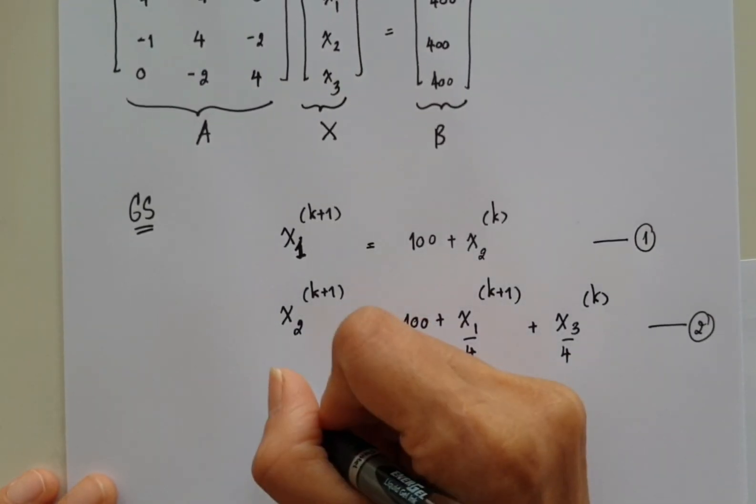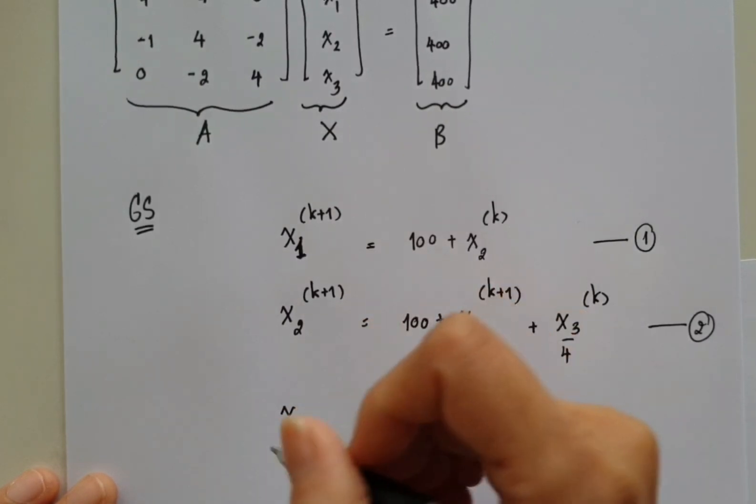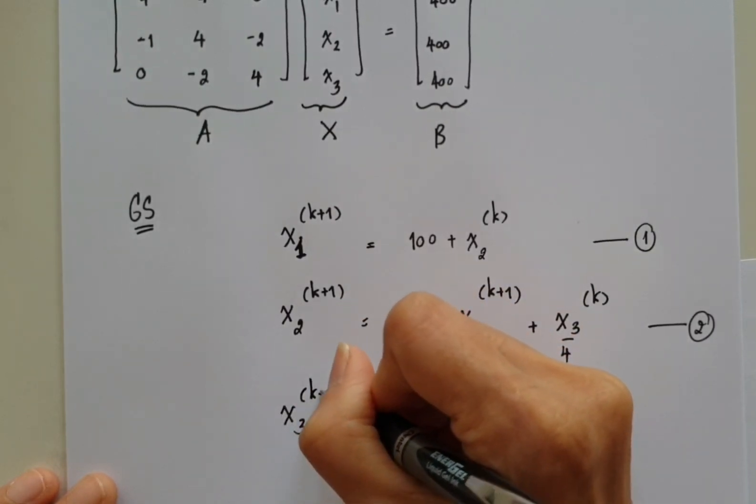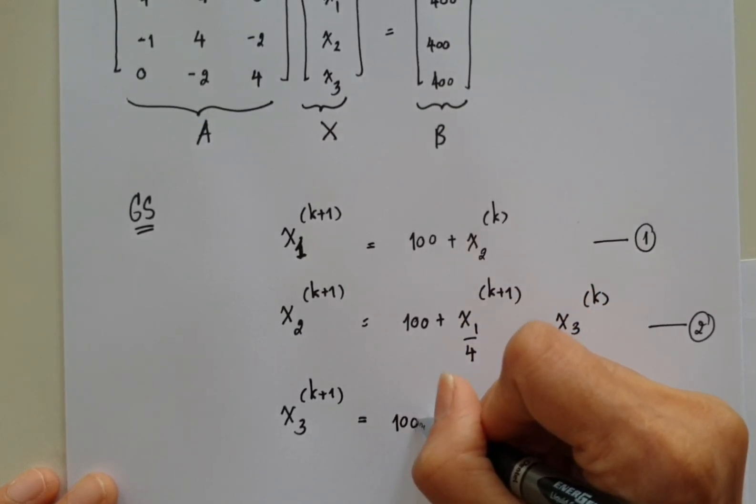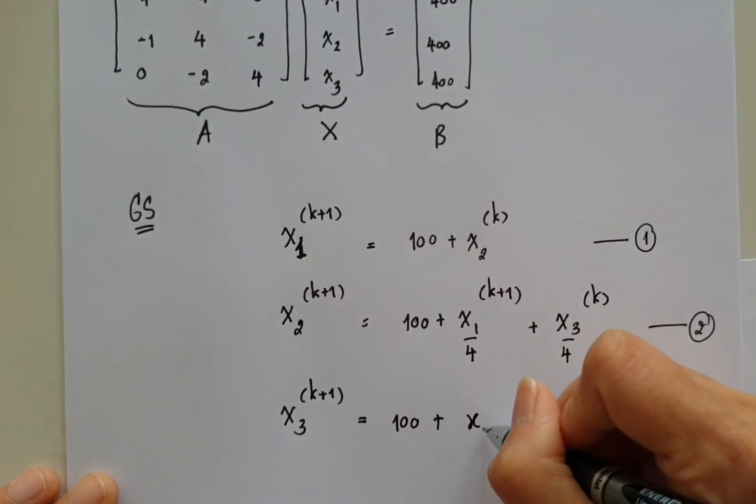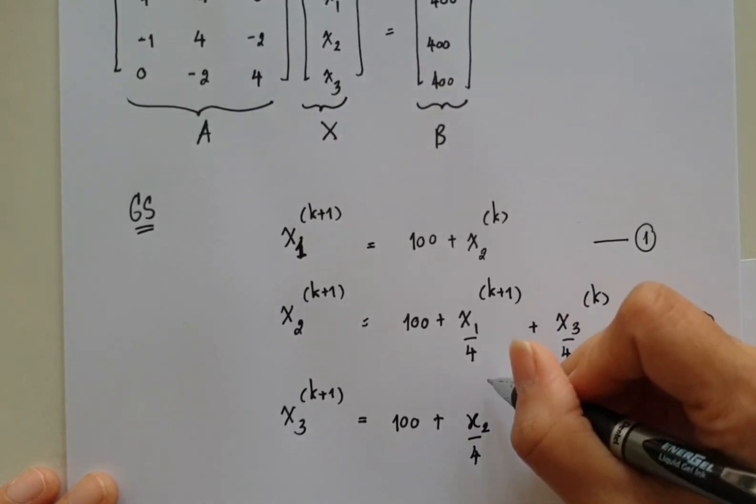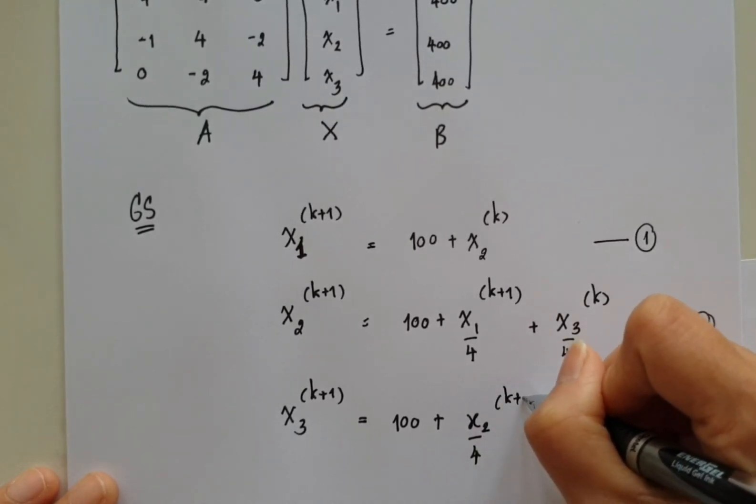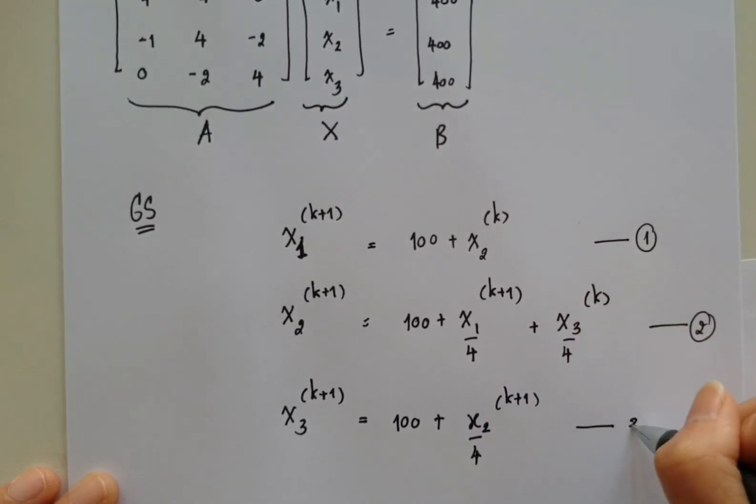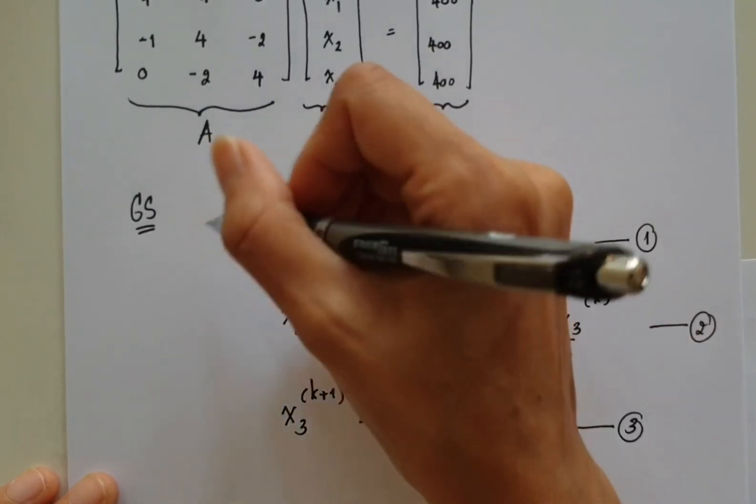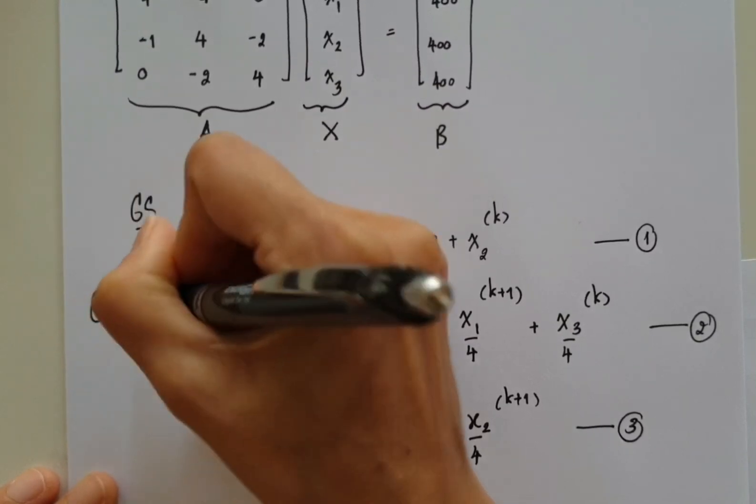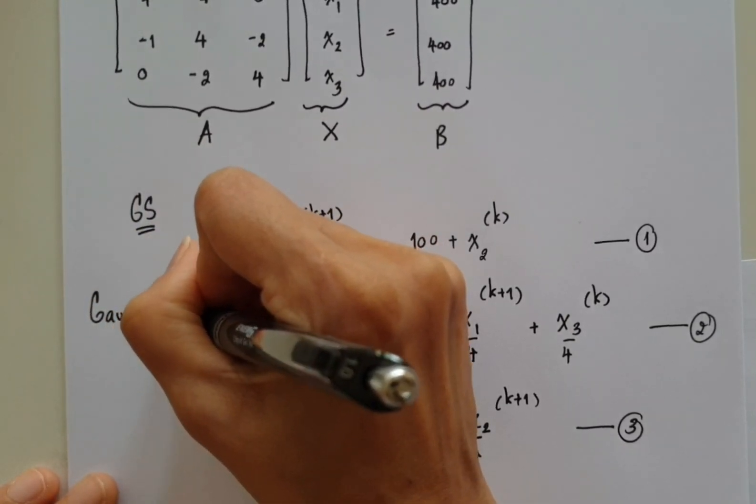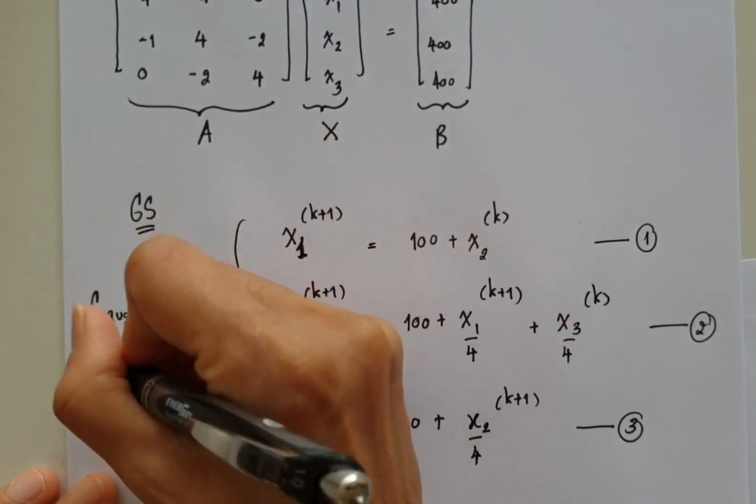And the last is x_3 at the k+1 iteration will equal to 100 plus x_2 over 4 at the k+1 iteration. This is the third equation. This equation is not new for us. It's actually from Gauss-Seidel method.